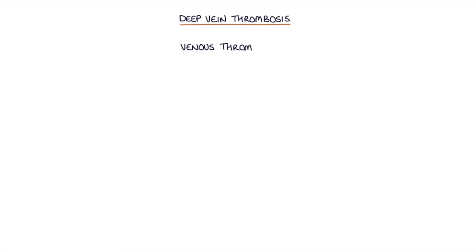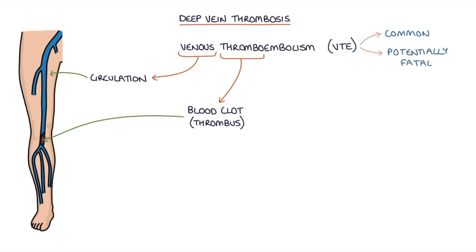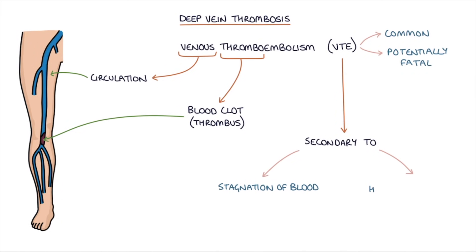Venous thromboembolism or VTE is a common and potentially fatal condition. This involves a blood clot or a thrombus developing in the circulation. This usually occurs secondary to stagnation of blood and hypercoagulable states, which is where the blood is prone to clotting.